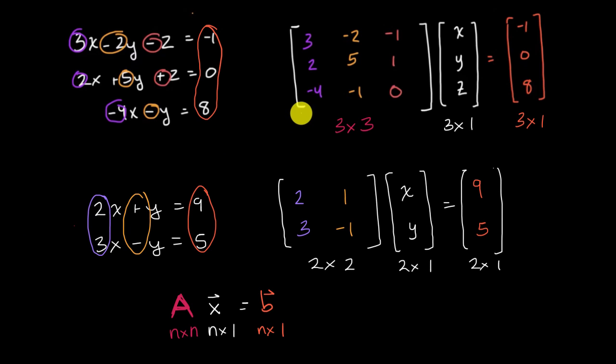In that first one, this is a three by three matrix. We could call that A. And then we could call this the vector x. And then we could call this the vector b. Now in that second scenario, we could call this the matrix A. We could call this the vector x. And then we could call this the vector b.